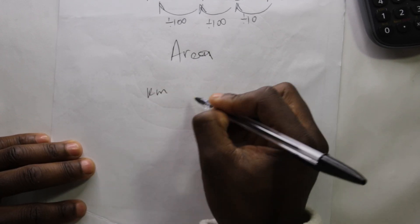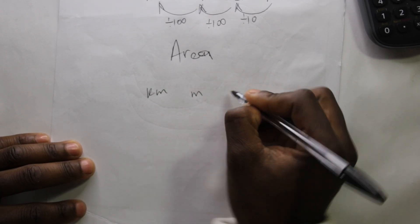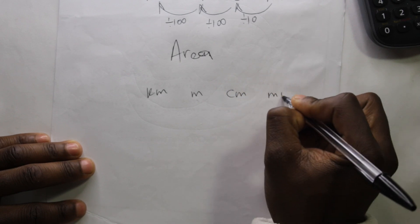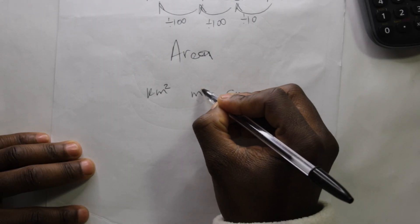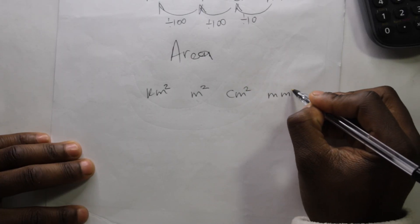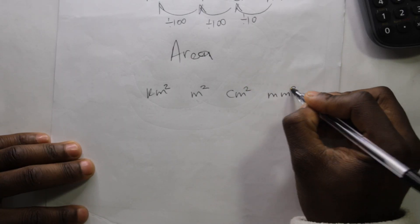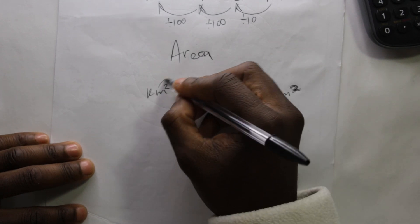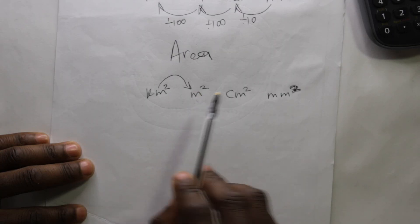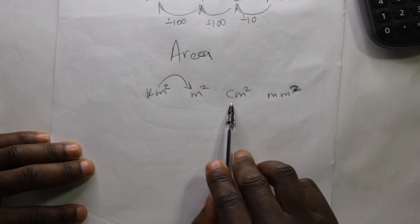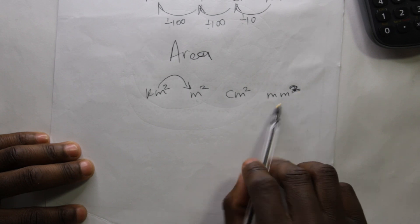For the metric system for area: kilometer, meter, centimeter, millimeter — but area units always have a square. So: square kilometer, square meter, square centimeter, and square millimeter.